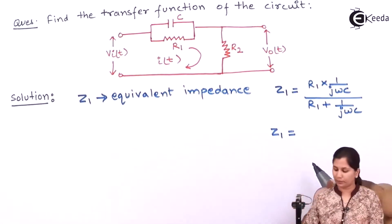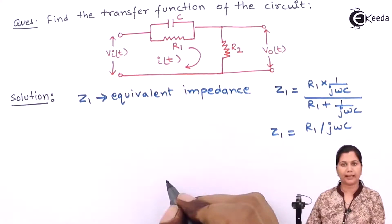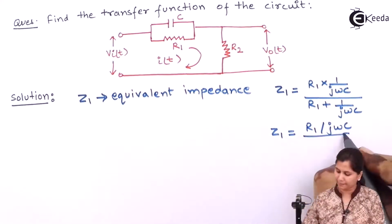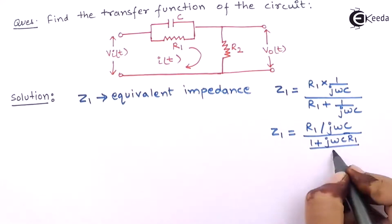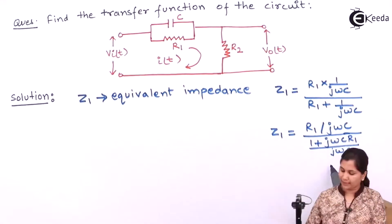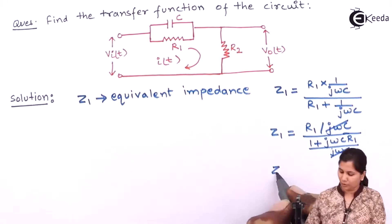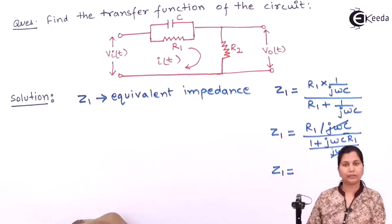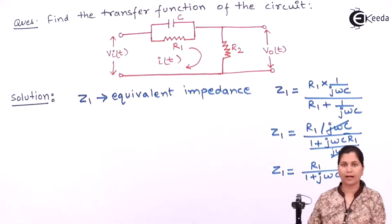So Z1 will be R1 by jωC. This jωC and jωC they can be cancelled out. So Z1 will be equal to R1 upon 1 plus jωCR1.